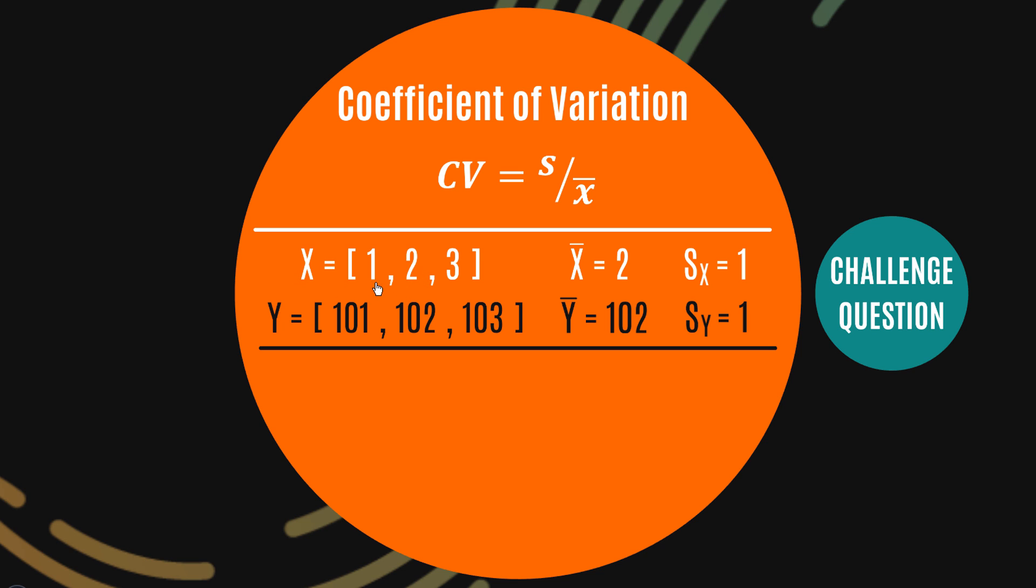So in terms of the scale of this X data set, this varies quite a lot, right? It triples from the smallest to the largest value. The same can't be said for Y. In terms of the scale of this Y data set, 103 is only fractionally higher than 101.